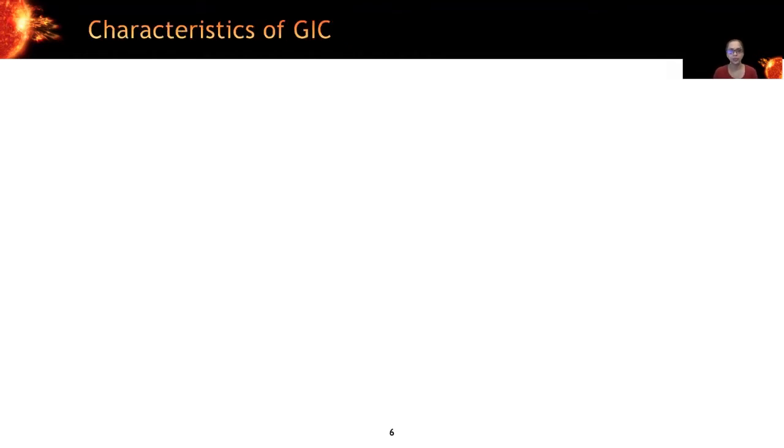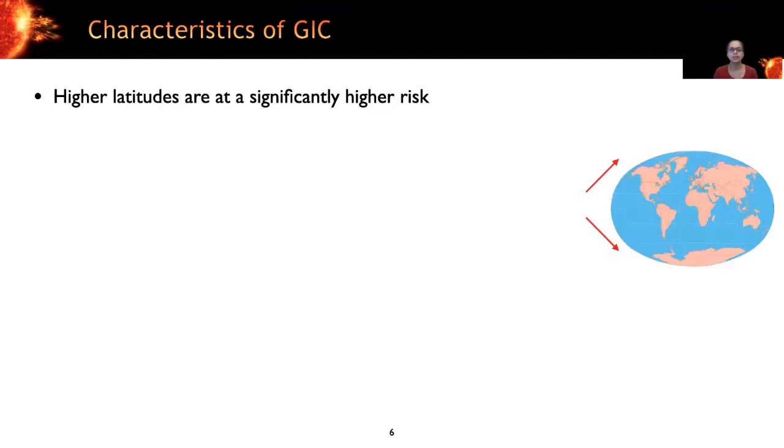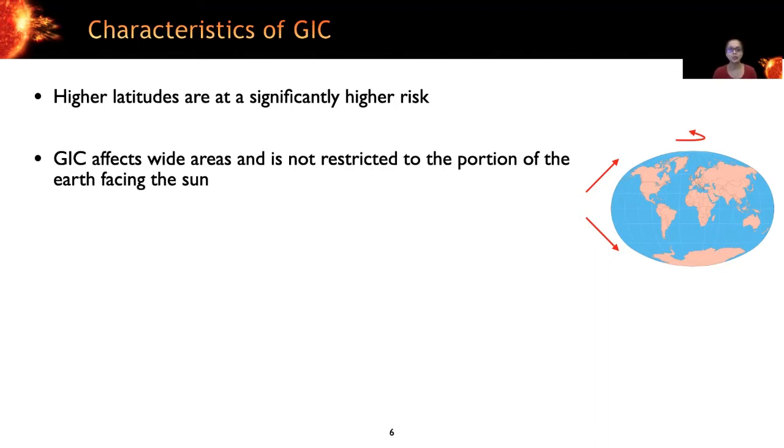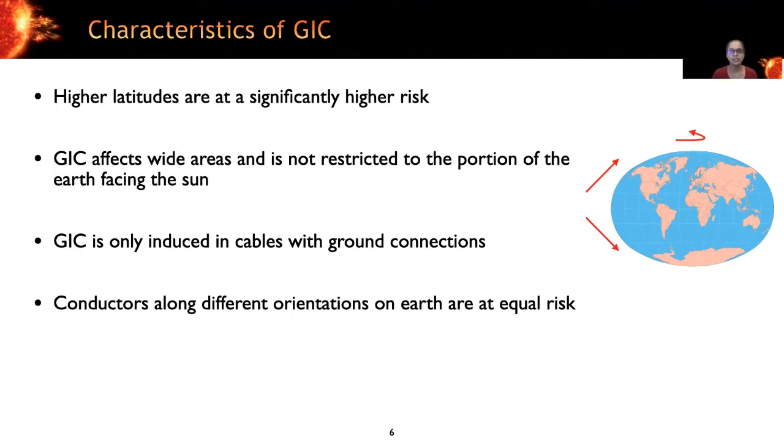Next, we'll see some characteristics of these induced currents to better understand the risk. Due to the orientation of the Earth's magnetic field, higher latitudes are at a significantly higher risk. And it's for the same reason that auroras are closer to the poles. The induced currents also have a much higher chance of being induced in the higher latitudes. Now, since the impact is caused by interactions with the Earth's magnetic field, the induced currents can affect wide areas across the globe and are not restricted to the portion of the Earth that's facing the sun. And GIC is only induced in cables, long cables with ground connections that are separated by large distances. So not all infrastructure components are equally vulnerable. And finally, conductors along different orientation on the Earth's surface are at equal risk. So in other words, north-south or east-west orientation of the cable does not matter.